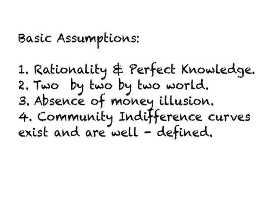We are working our way through basic assumptions needed to understand international trade. So far we have worked through four assumptions: the first being rationality and perfect knowledge; the second, a two-by-two-by-two world; the third, absence of money illusion; and the fourth, that community indifference curves exist and are well defined. Using assumptions three and four, we were able to determine consumer equilibrium.